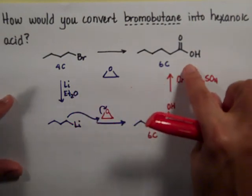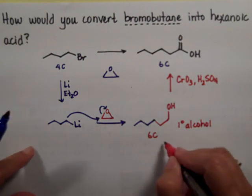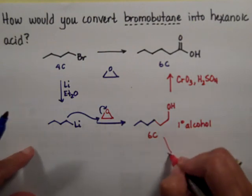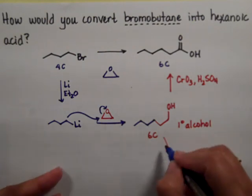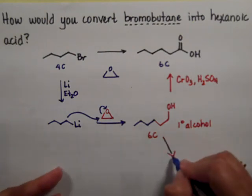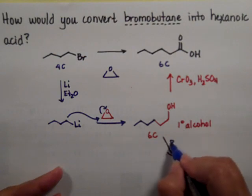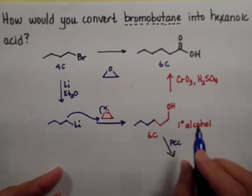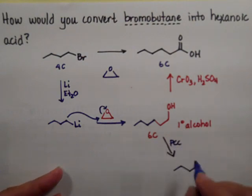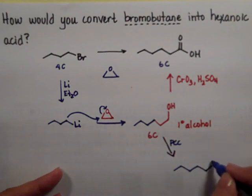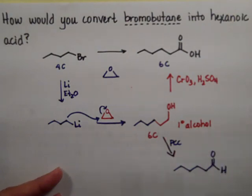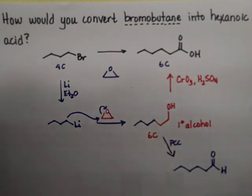If it had been an aldehyde — since I have plenty of paper I'll go ahead and do it — you could have used PCC if you wanted an aldehyde: one, two, three, four, five, and six carbons. So you can either go to the carboxylic acid or the aldehyde.